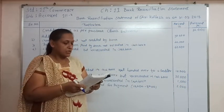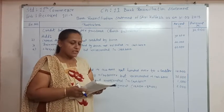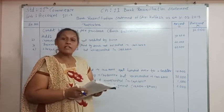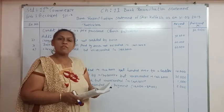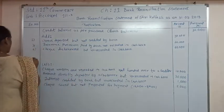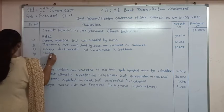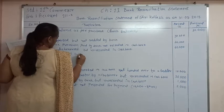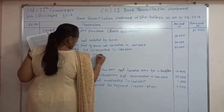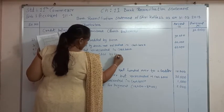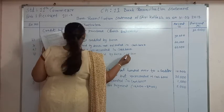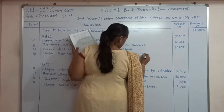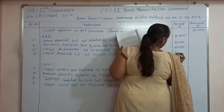Transaction number 8: checks of rupees 50,000 were deposited in the bank, but out of this the bank has given credit of only rupees 30,000 by 31/3/50. So checks were deposited but not fully credited by the bank; we have to add the uncredited amount. Entry: check deposited but not credited by bank — amount is 50,000 minus 30,000 equals rupees 20,000.